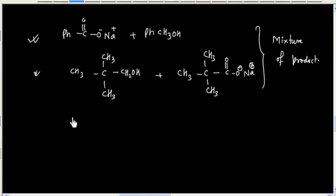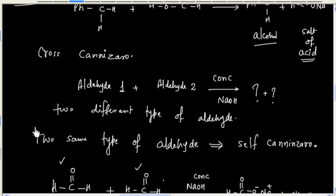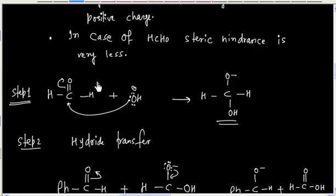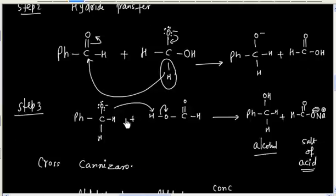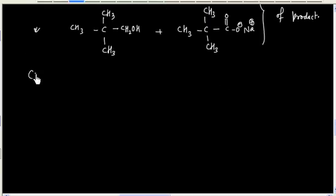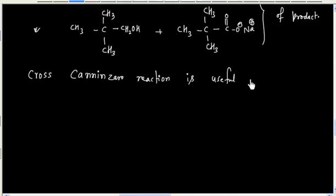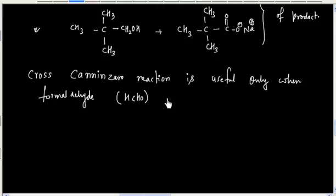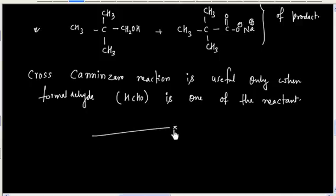The Cross-Cannizzaro reaction is useful only if one of the reactants is formaldehyde (HCHO), because in that case formaldehyde always gets oxidized, since the nucleophilic attack by OH⁻ occurs preferentially at the carbonyl carbon of formaldehyde. So the Cross-Cannizzaro reaction is useful only when formaldehyde is one of the reactants.